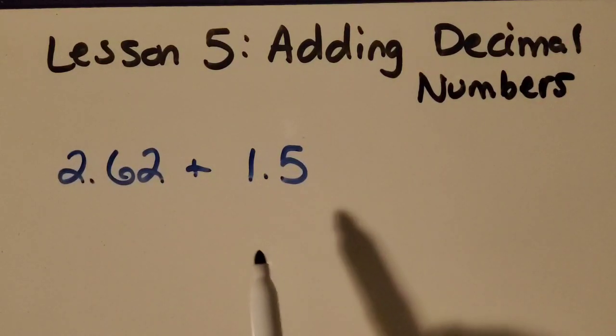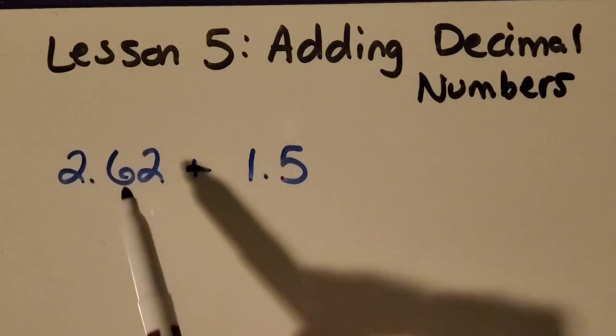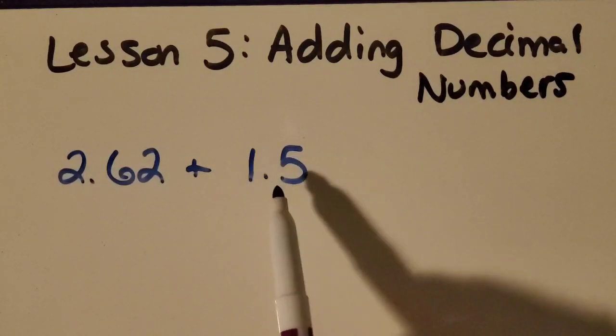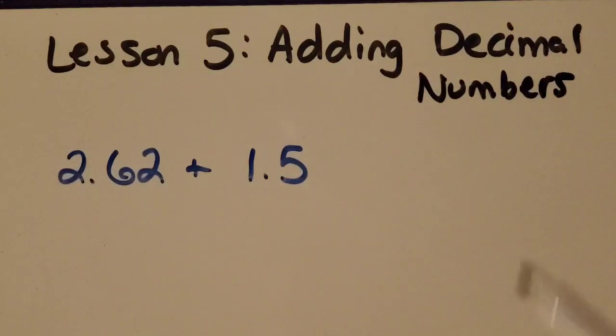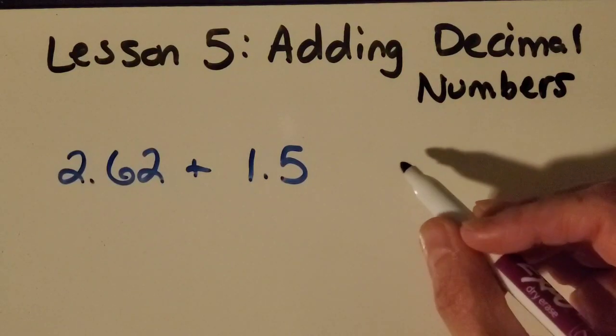You might be thinking right away that something is a little bit weird about this problem because this decimal number goes to the hundredths place, this decimal number doesn't. So let me show you how we can add these two.